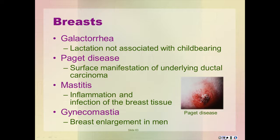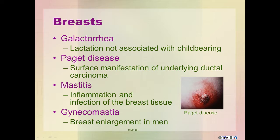The subjective data associated with galactorrhea includes spontaneous nipple discharge, usually bilateral, and possible related medical histories such as amenorrhea, pregnancy, post-abortion, hypothyroidism, Cushing syndrome, or acute renal failure. Paget disease is the surface manifestation of underlying ductal carcinoma. A crustiness of the nipple, areola, and surrounding skin occurs with red, scaly, crusty patches that may be unilateral or bilateral.